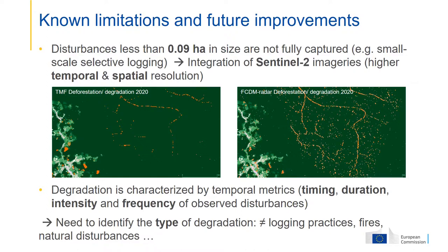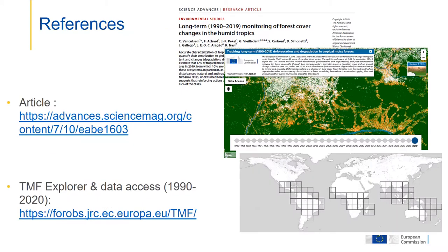The second limitation is that degradation is, for now, only characterized by temporal metrics — through timing, duration, intensity, and frequency — which do not directly translate into a type of degradation. So we cannot precisely identify the type of degradation such as logging, different logging practices, fires, or distinguish anthropogenic from natural disturbances. This need for further study is very important to address the drivers of degradation, for carbon loss assessment or biodiversity loss assessment. Thank you very much. I leave you with the references to the article and to our TMF Explorer and data access.